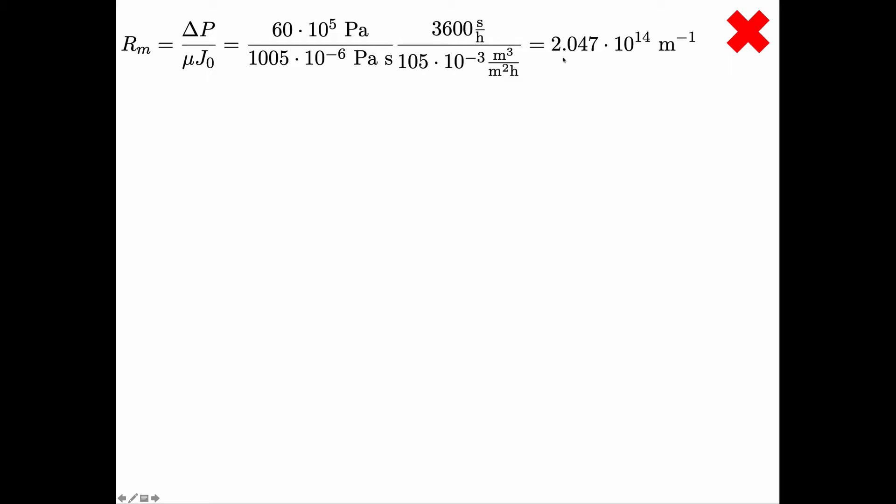3600 seconds per hour and so on and we get a membrane resistance of 2.047·10¹⁴ per meter. And 10 to the power 14, that's a reasonable size, reasonable magnitude, so that seems okay.